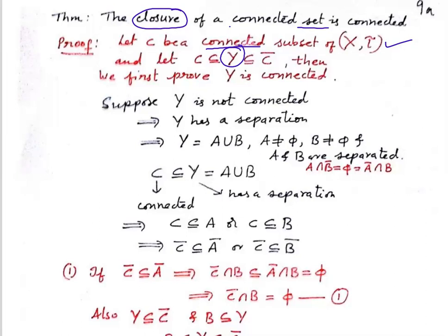We are taking any subset Y in between C and C-bar. C is anyway connected. We have to prove that Y is connected. If we can prove any subset between C and C-bar is connected, then in particular, since C-bar is a subset of C-bar itself, C-bar will be connected. So we first prove that Y is connected.